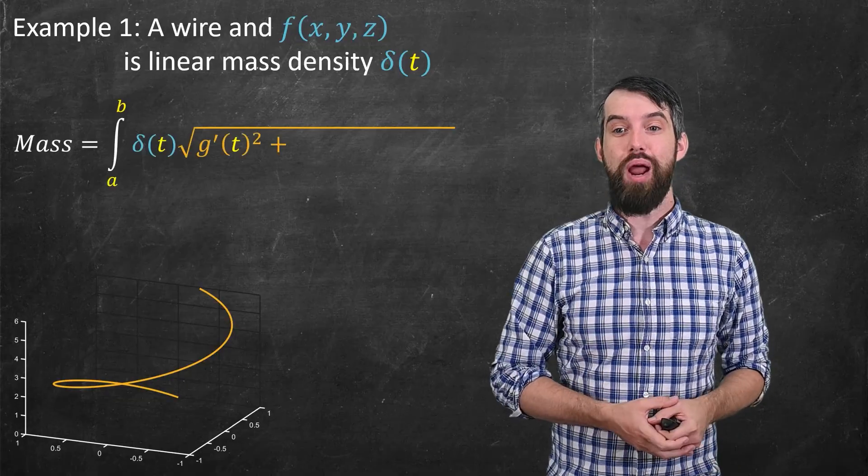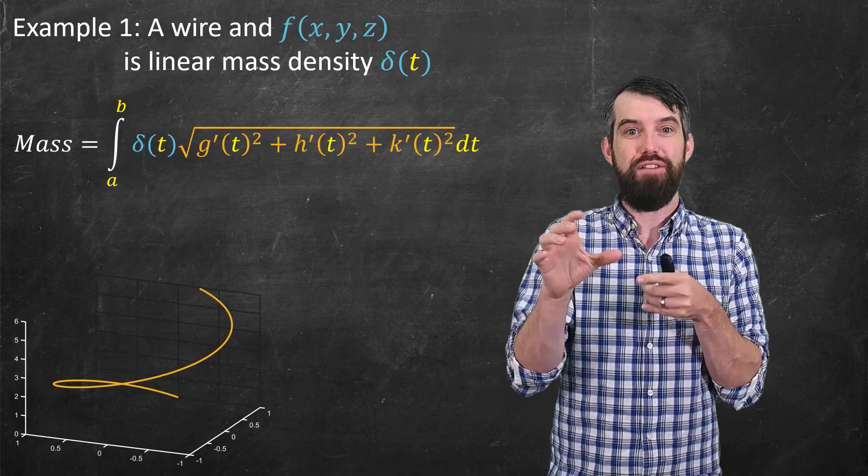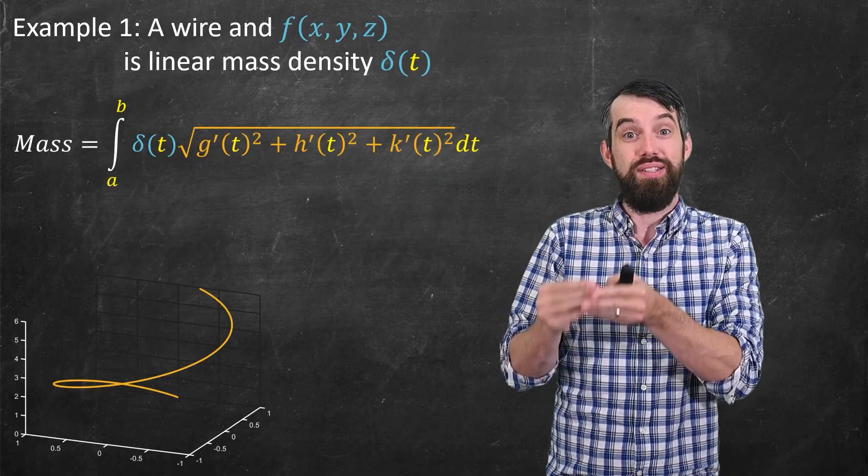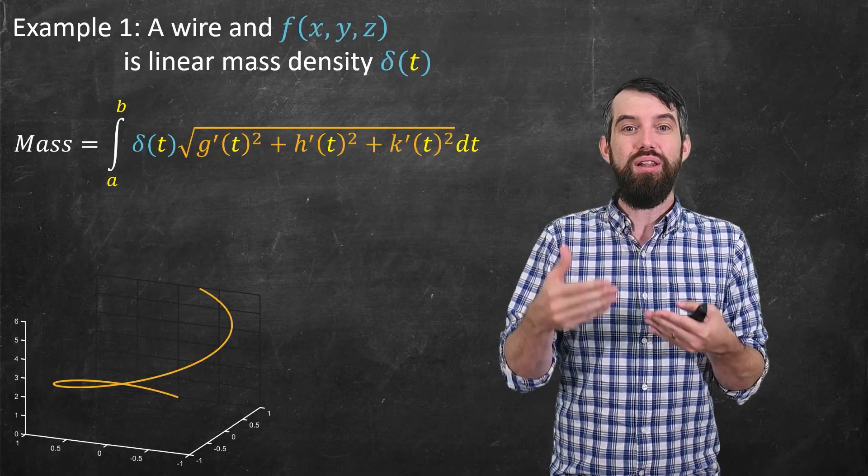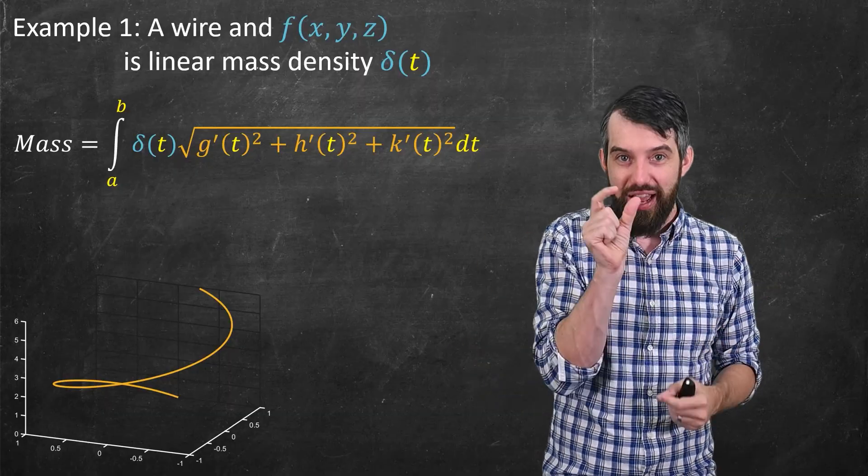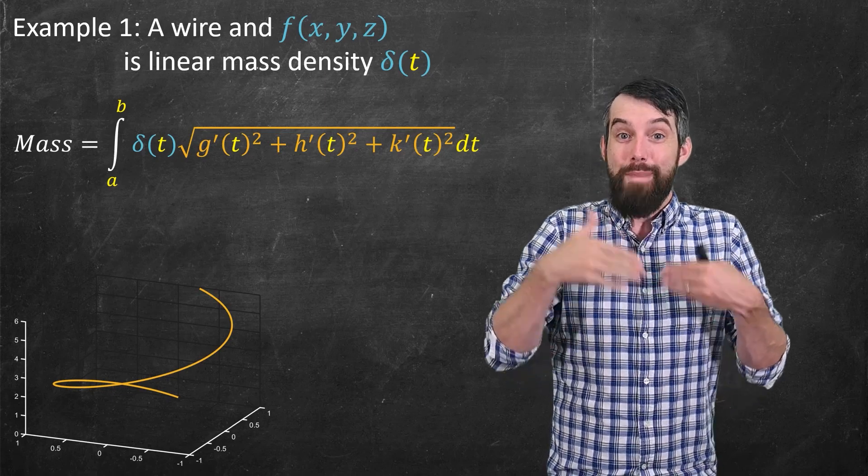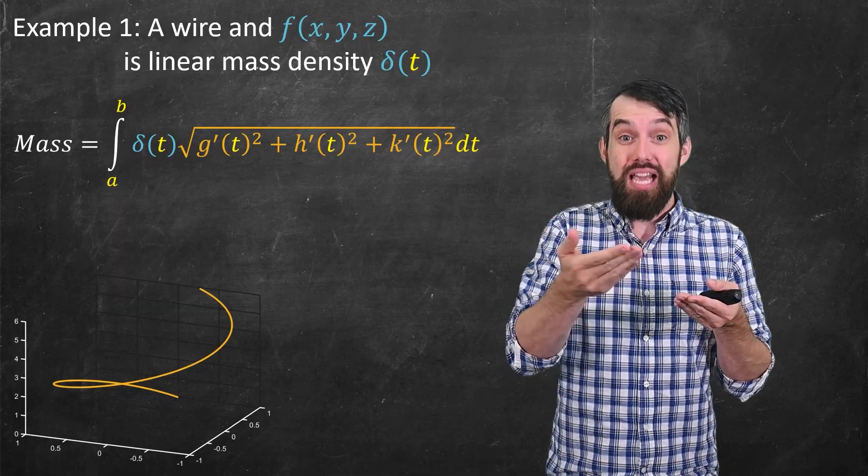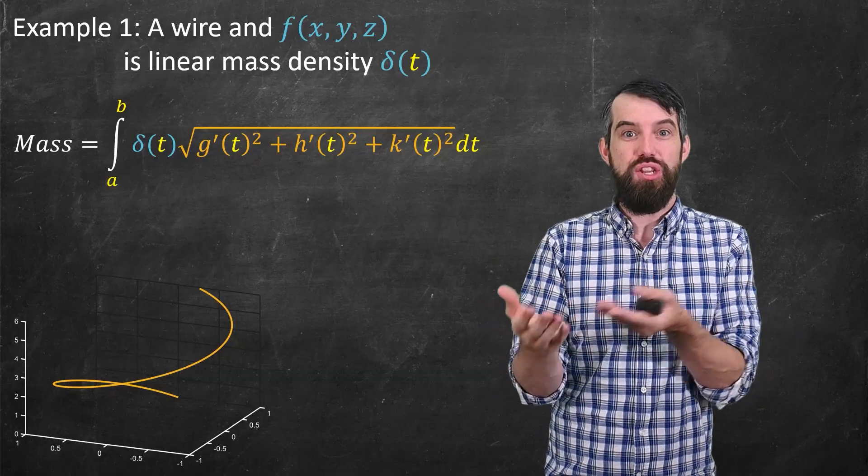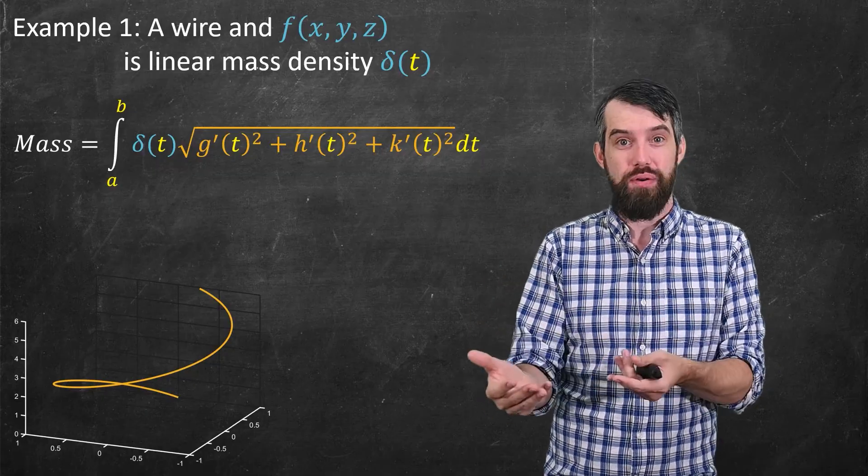Then what the line integral represents is just the mass of that wire. The way I think about this is the stuff in orange, the square root of the g' squared plus the h' squared plus the k' squared dt, all of that represented a little arc length, a little ds of arc length. And so what I'm imagining is that I have my larger curve and I take some small little change in arc length, then what is the mass of that little section? It's just the density at that section times its arc length. And so you add up all of those little segments and you get the mass. So the line integral can tell you what the mass of a variable density wire is.